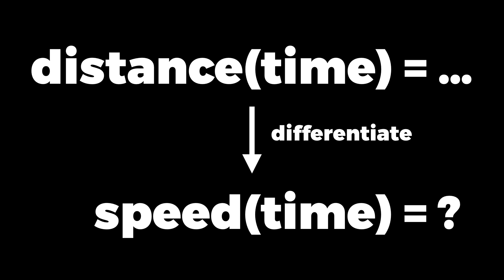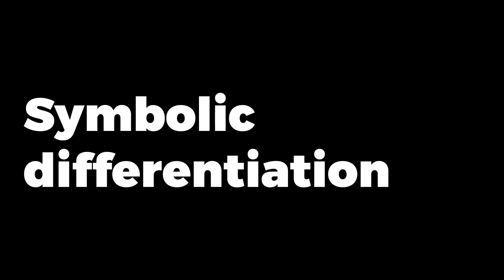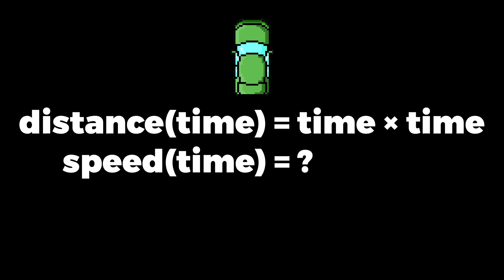So if we know these distance functions, how do we get a computer to calculate the speeds? There are two traditional ways of doing it. The first is called symbolic differentiation. The idea is to start with the expression of the function you want to differentiate, for example time multiplied by time, and work out an expression for the differentiated function.